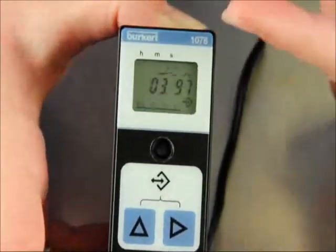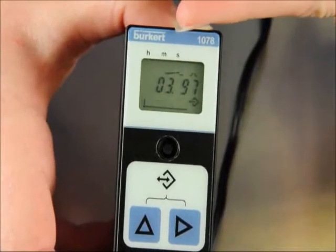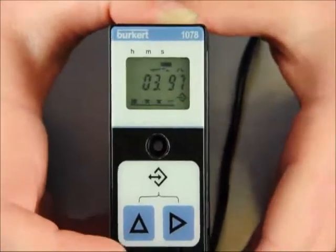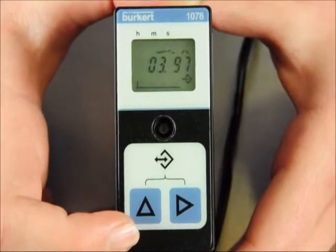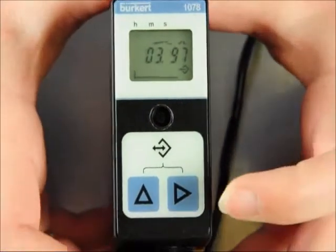Here you will see a bar flashing under the seconds, the setting range for time. Press the up arrow key to cycle through the hours, minutes and seconds and choose the bar under seconds only and press the right arrow key.